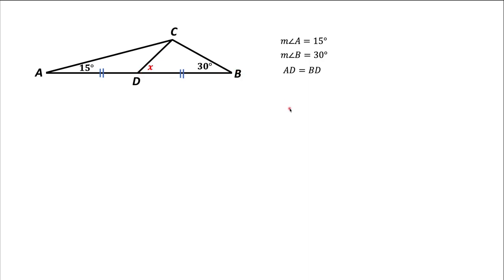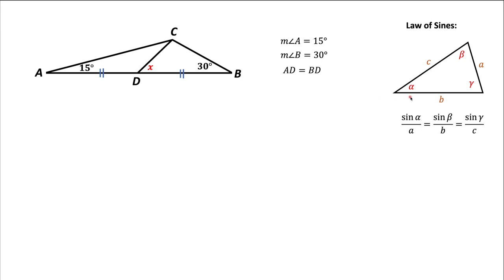The way we're going to approach this problem is we're going to use the law of sines. Just to remind you, the law of sines is true for an arbitrary triangle. If I have a triangle that has three sides of length A, B, and C, and three angles with measures alpha, beta, and gamma, then the ratio of the sine of an angle to the length of the opposite side is the same for all angles.